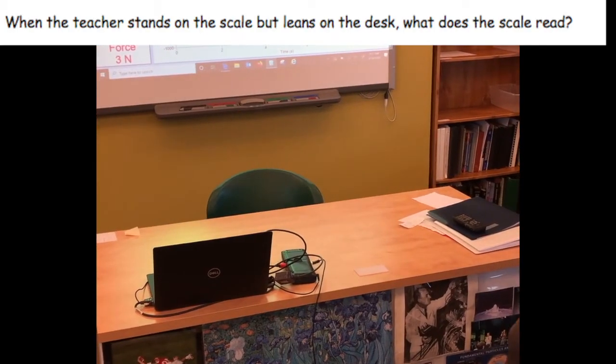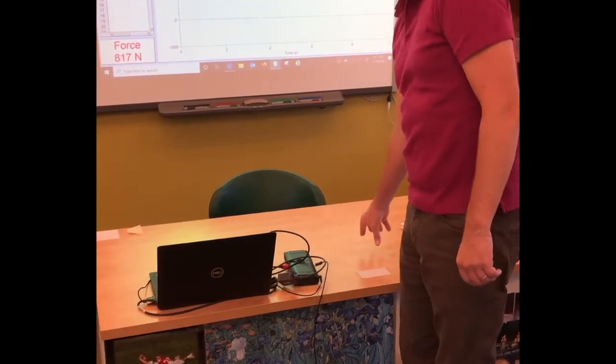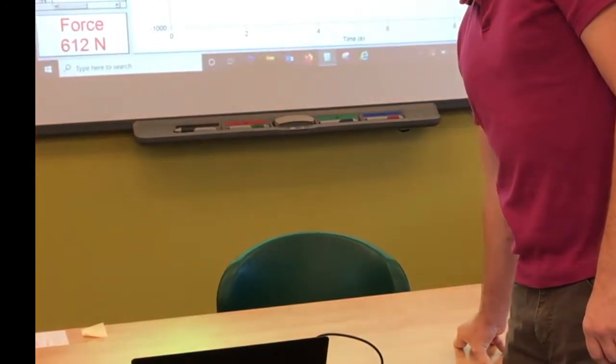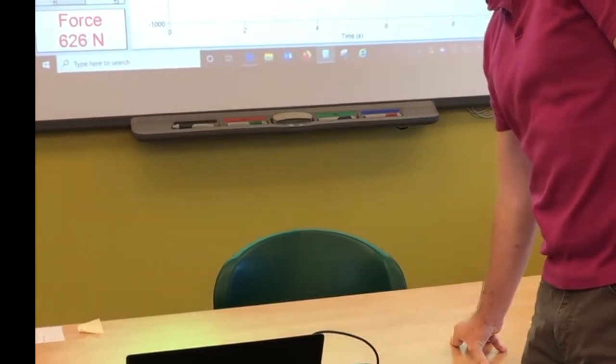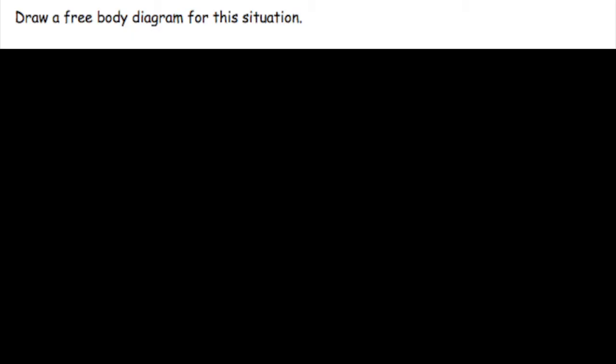Let's take another measurement. This time, I'm going to lean on my desk. Now the scale only says 600 newtons. Why is that? Do I actually weigh less? Is the earth pulling on me less because I'm leaning on the table? No, of course not. How can we explain this? We better draw a free body diagram.